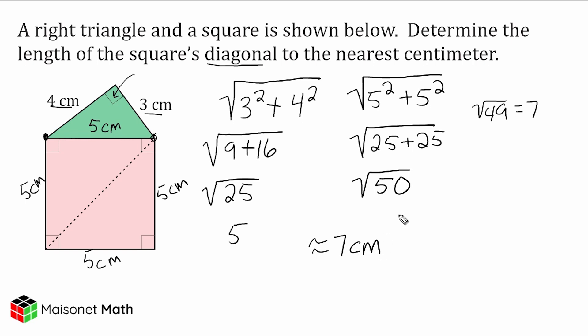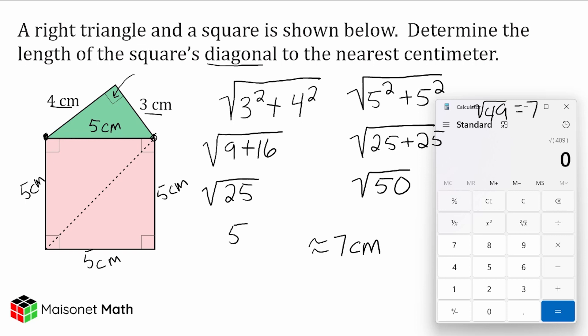All right. So let's go ahead and punch 50 into our calculator and hit the square root button. And we get 7.07 and a bunch of numbers. This is an irrational value. Now, if we were rounding to the nearest tenth, we would have 7.1. But we are rounding to the nearest centimeter, which means the nearest whole number. And this is not enough to round it up to an eight. So it's going to be seven centimeters.